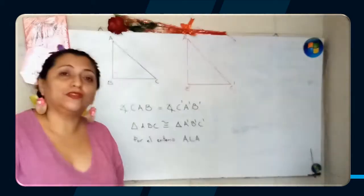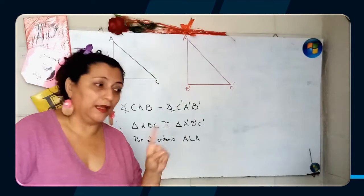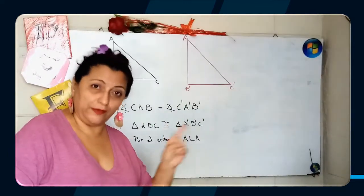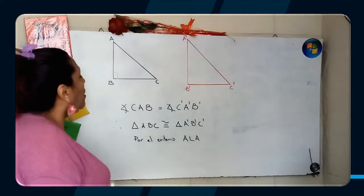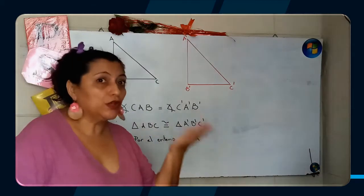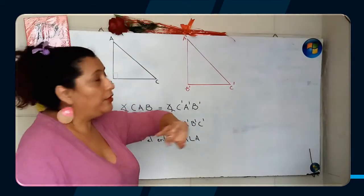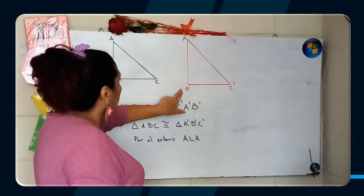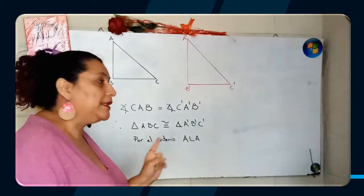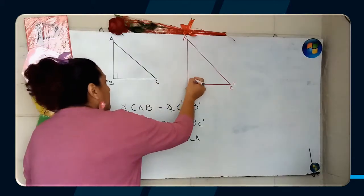Siempre que usted vea un cuadrito así en un triángulo, ahí hay un ángulo de 90 grados. Luego me dan un segundo triángulo y este está nombrado A'B'C'. También dicen que es un triángulo rectángulo.